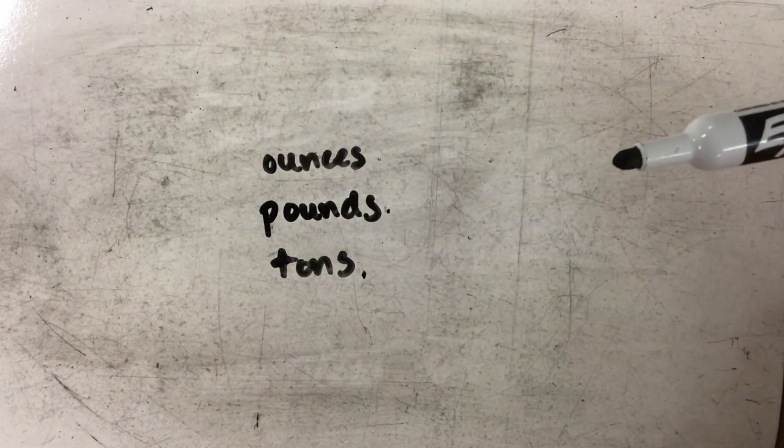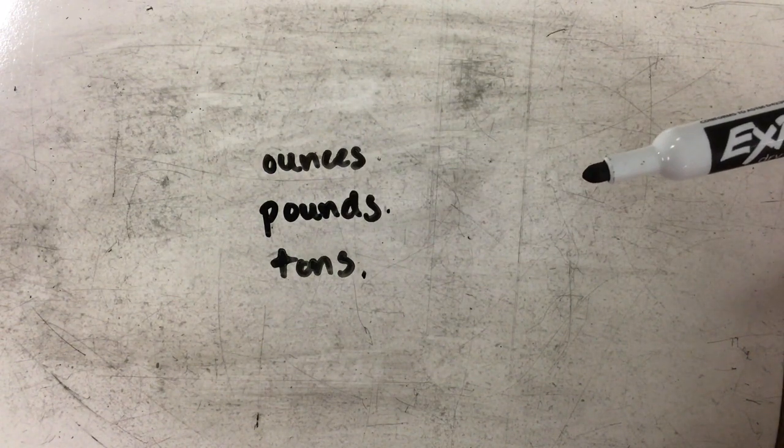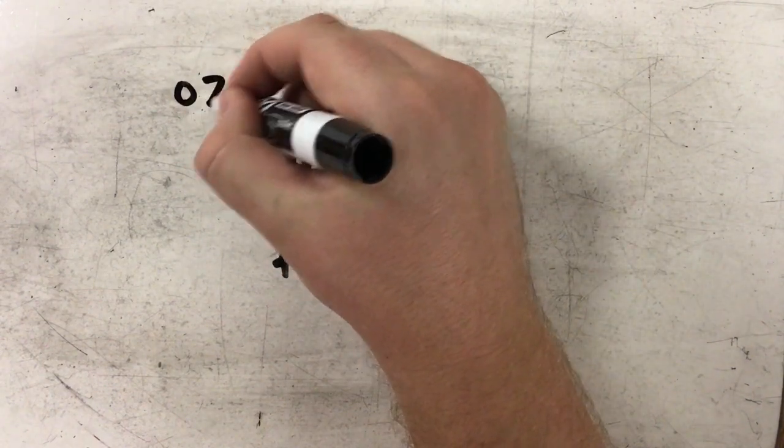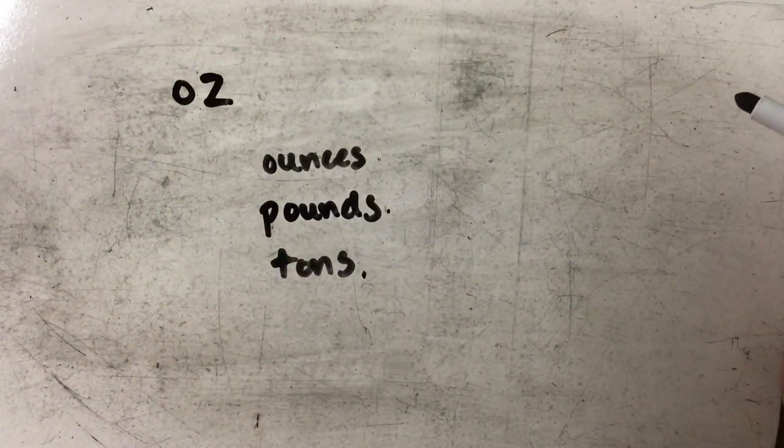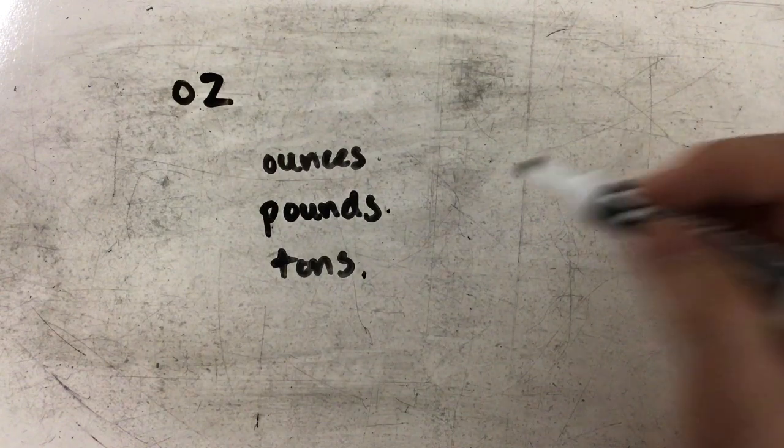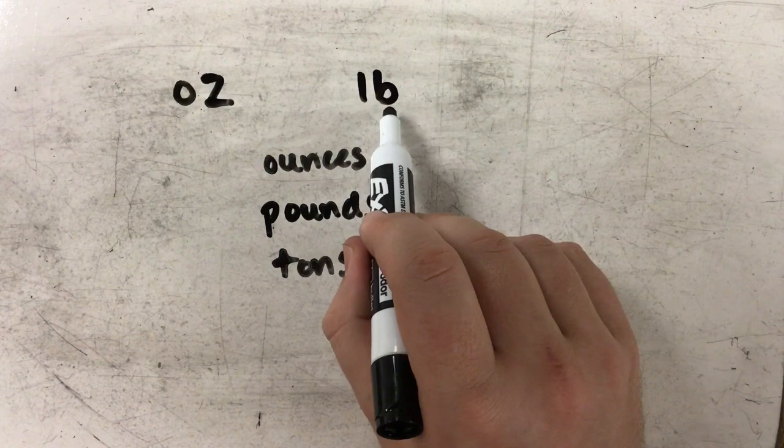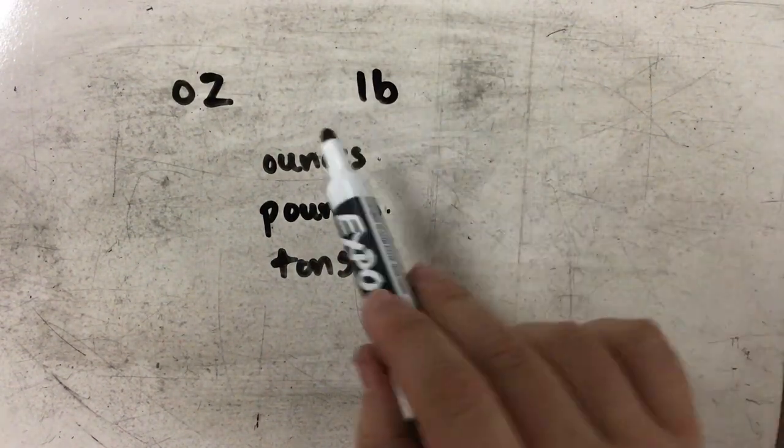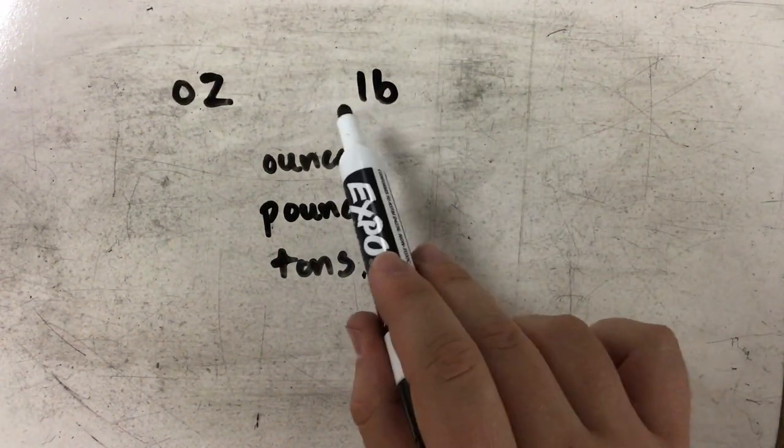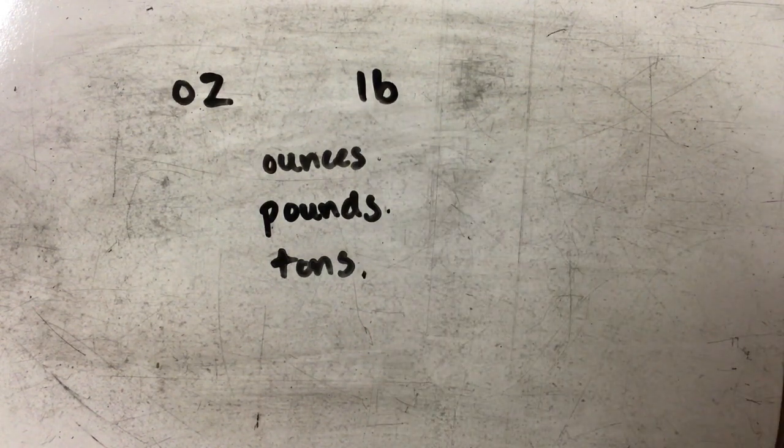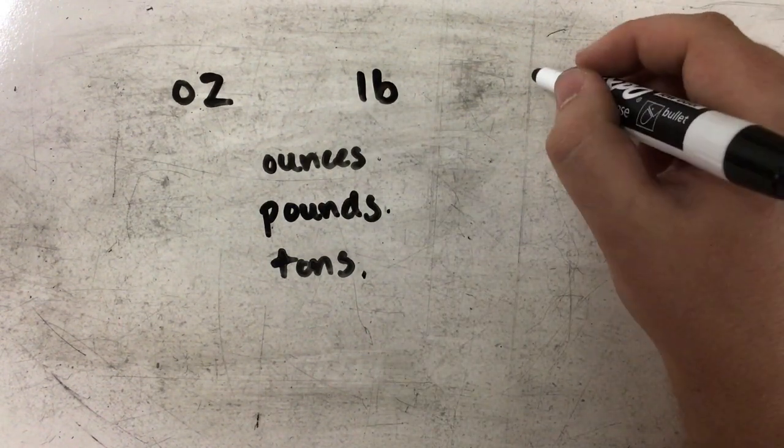But I want to point out that the abbreviations for ounces and pounds are a little bit different than what you might think that they would be. So for ounces, our abbreviation is oz. And for pounds, the abbreviation is lowercase l and lowercase b. I know that kind of looks like one and maybe even a six, but that is lb for pounds. And then for tons, we have a capital T.